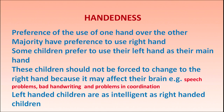Preference for the use of one hand over the other is technically called handedness. The majority prefer to use the right hand, but some children prefer the left hand as their main hand. These children should not be forced to change to the right hand because it is governed by the brain — forcing a change may adversely affect brain activity, particularly speech, handwriting, and coordination. Left-handed children are equally intelligent and can do every kind of activity. Each child is unique, endowed with inherent potential that we must unfold with due care.